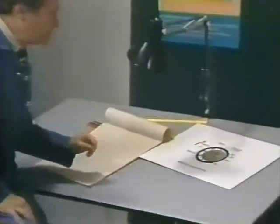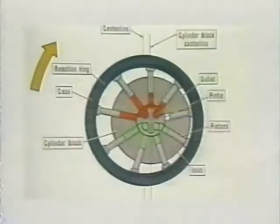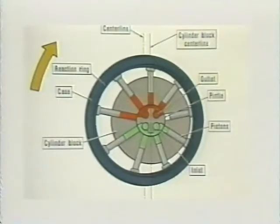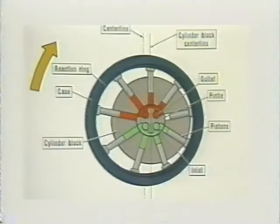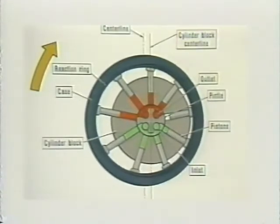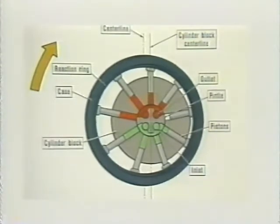There are three basic types of piston units. In this one, the bores in the cylinder block look like the spokes of a wheel. The pistons move in and out of them radially as they follow the inner contour of the reaction ring. The displacement is determined by the amount the reaction ring is offset from the center line of the cylinder block.